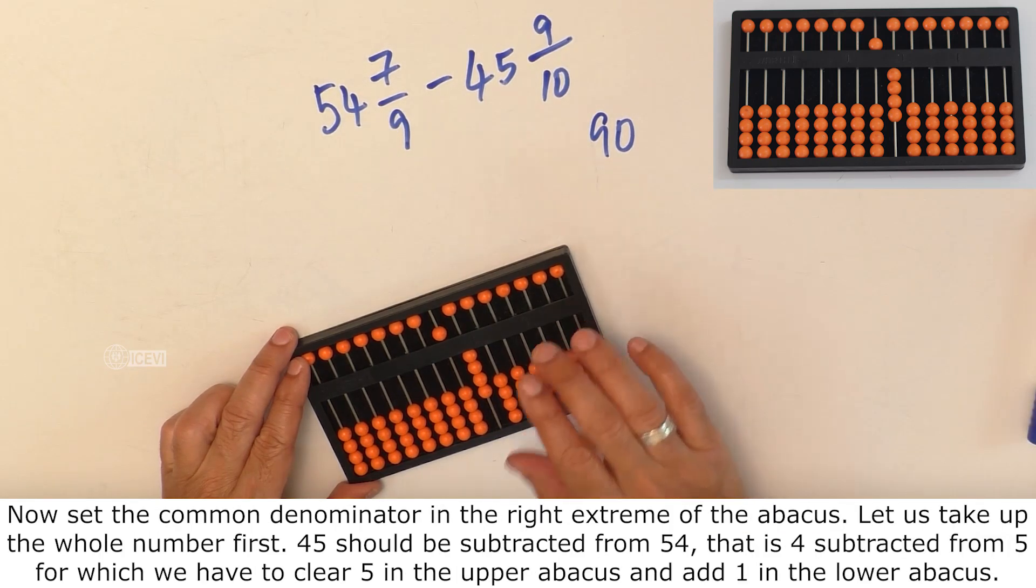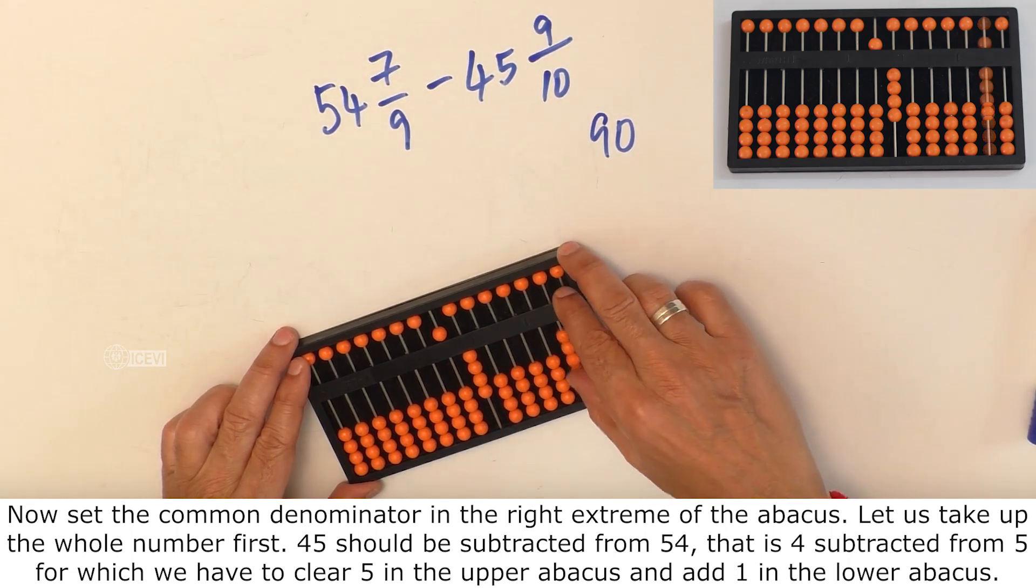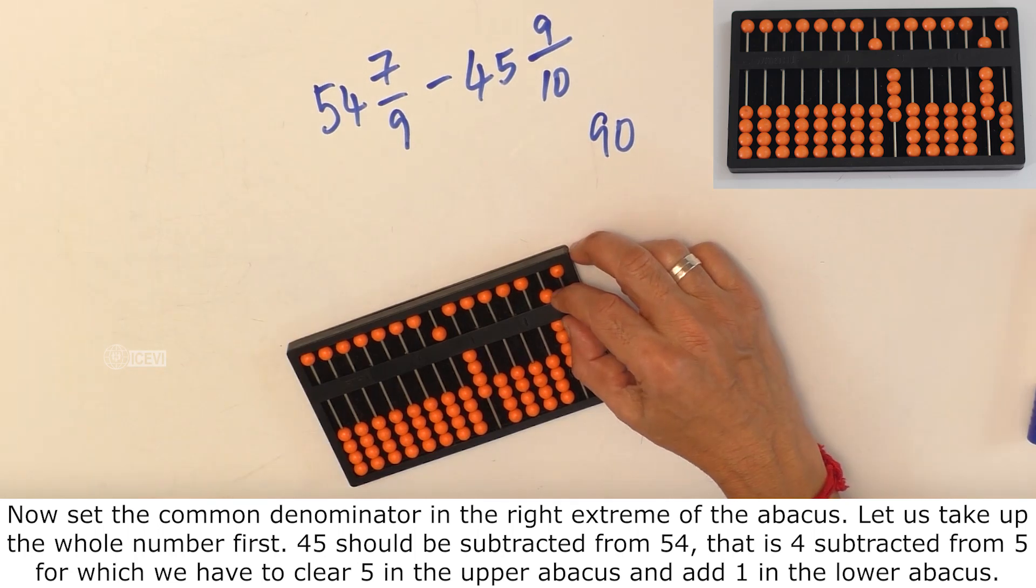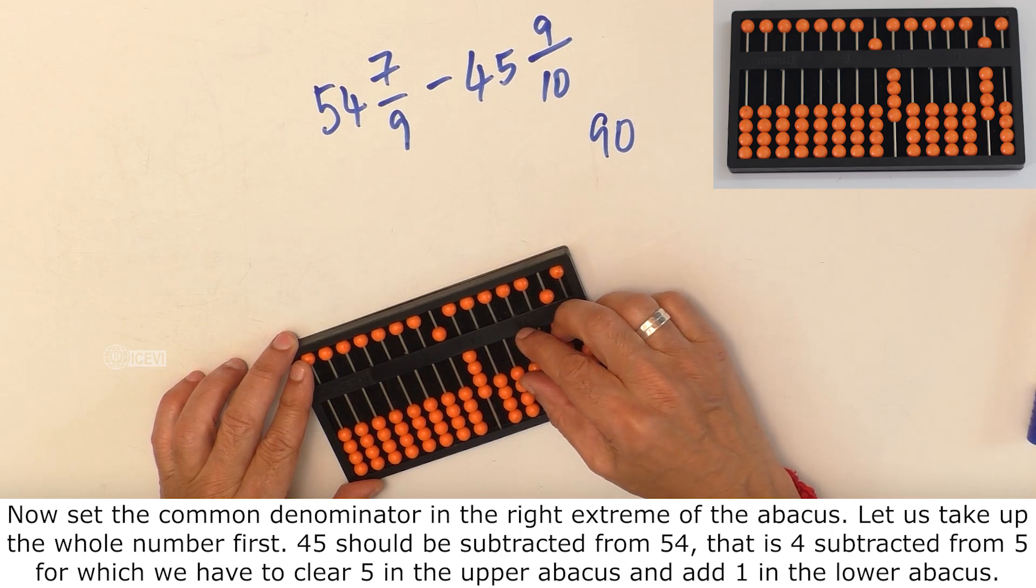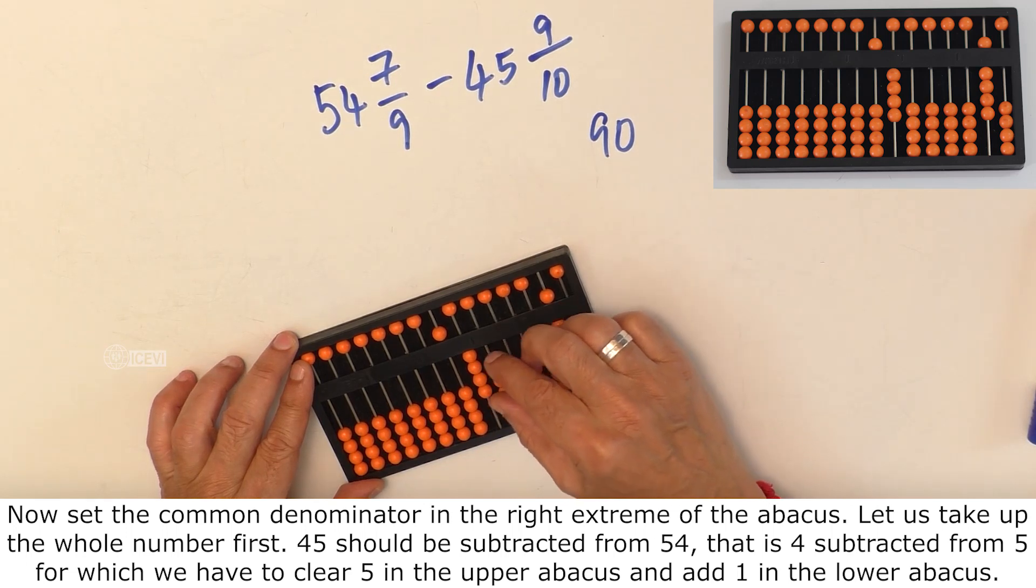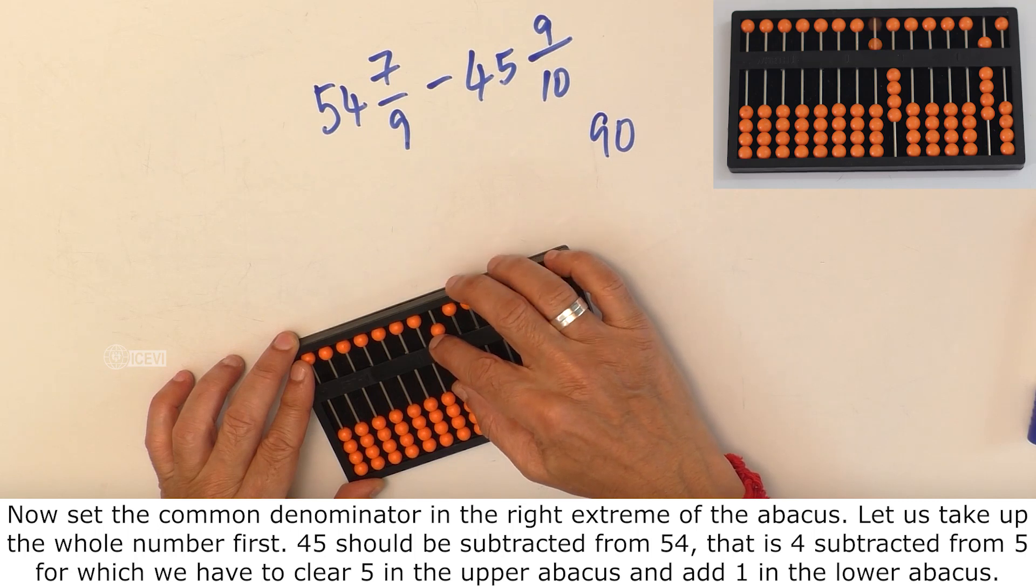Now set the common denominator in the right extreme of the abacus. Now take up the whole number first. Here 45 should be subtracted from 54. That is 4 subtracted from 5. For which you have to clear 5 in the upper abacus and add 1 in the lower abacus.